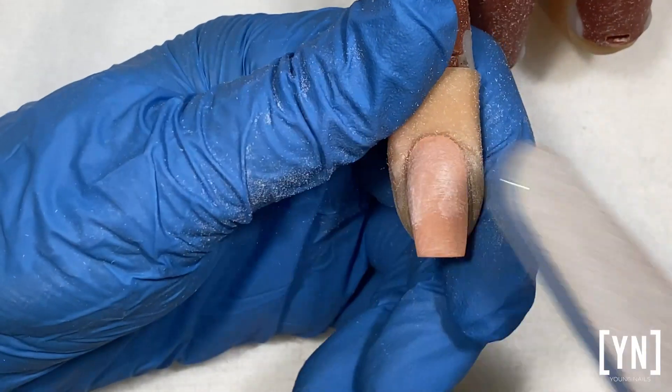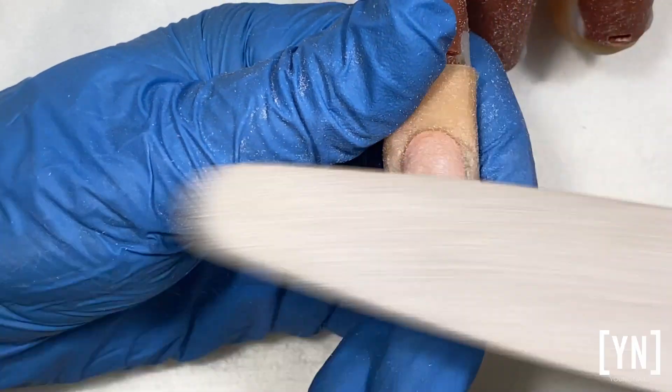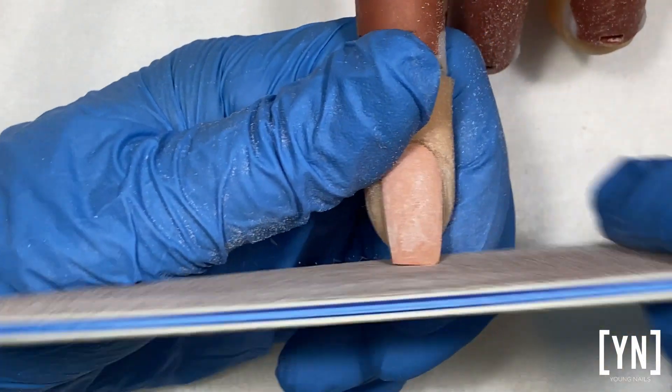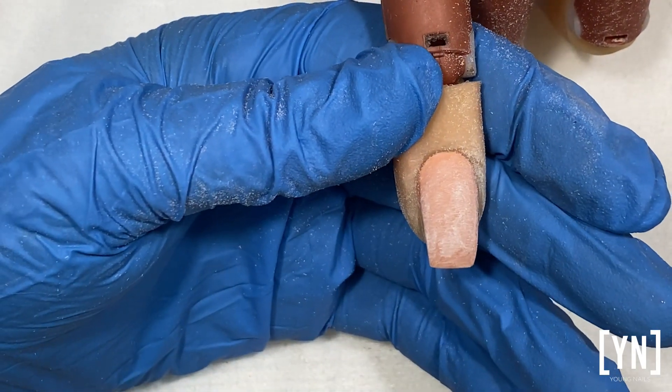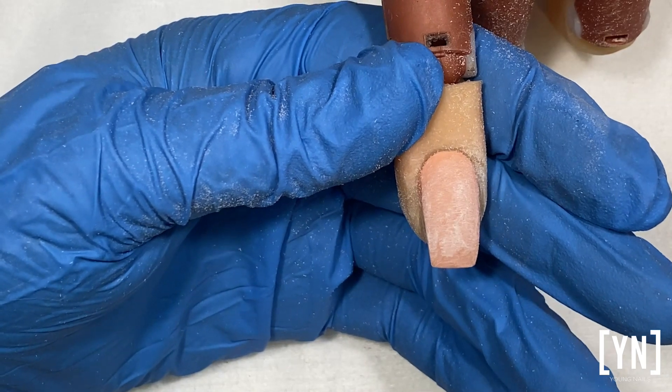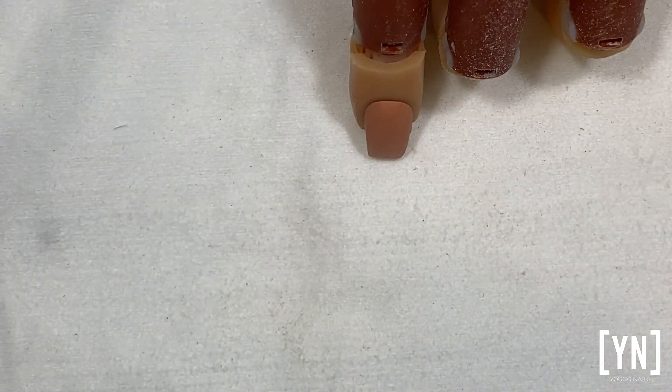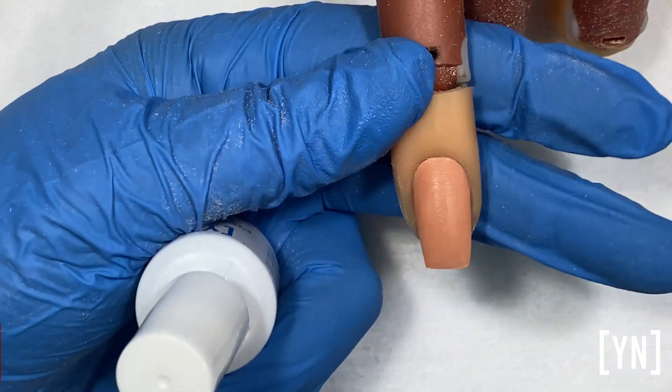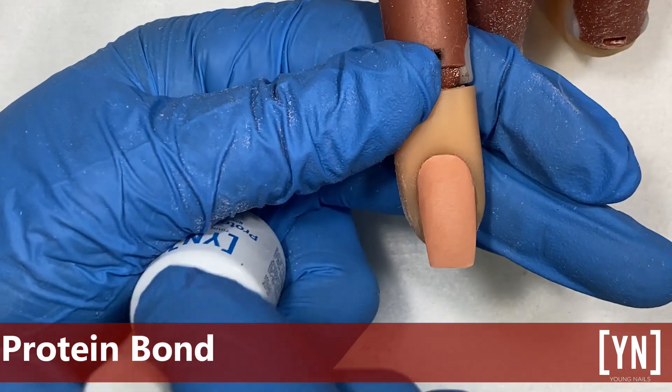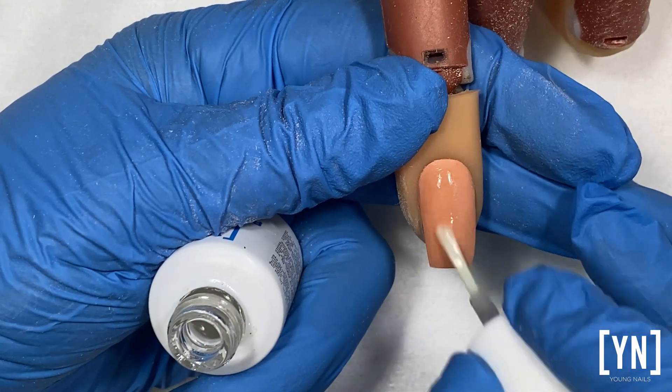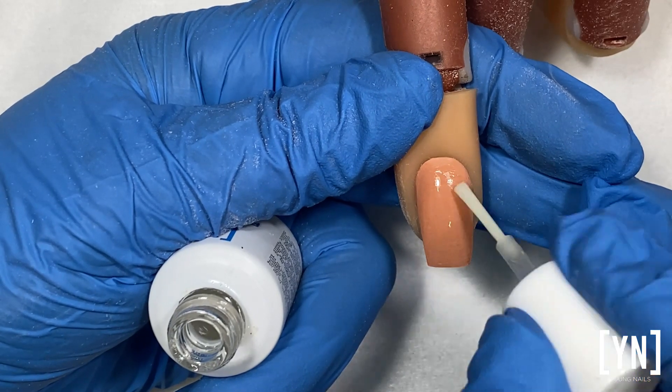Because your product won't adhere if you don't have proper preparation. Because I am on an overlay, I don't need to apply base manicure. I can go into my protein bond, just let it dry, and then go directly into my color application.